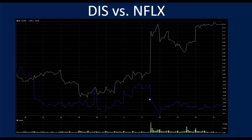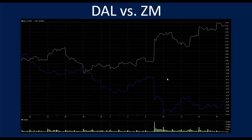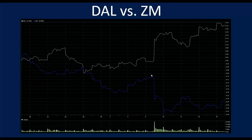The day where Disney and Netflix went in opposite directions was the Pfizer vaccine announcement. The other day where Disney popped up and Netflix didn't do anything was the Moderna vaccine announcement. Delta and Zoom is another striking example of the reopen trade — the virus news gets bad and they come back together, then you get more positive vaccine news and they pop apart again.